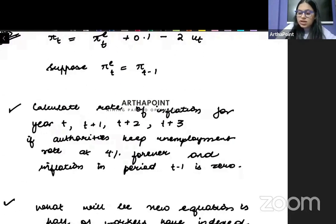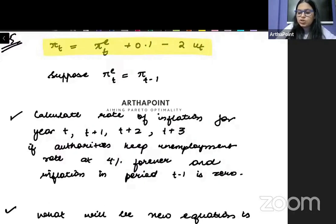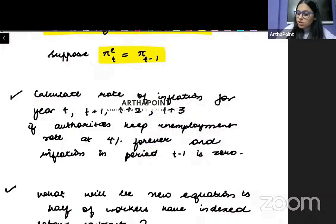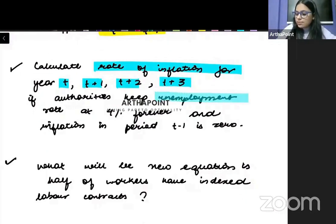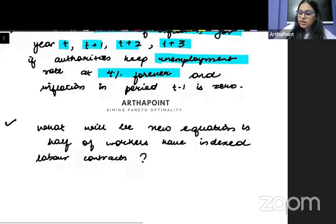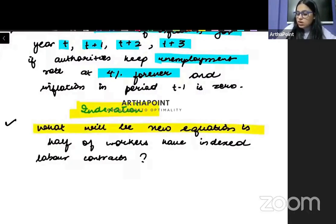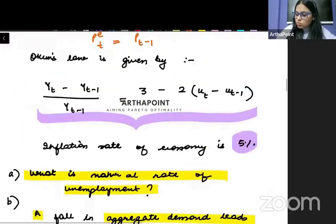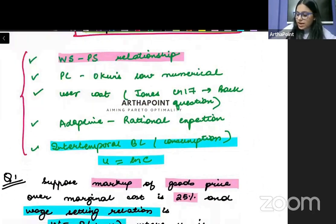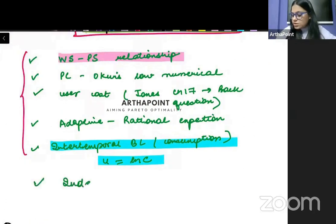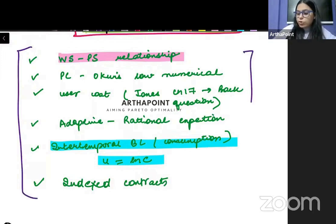This type of question also has a very high chance of being asked in exam. Where they will give you the equation of the Phillips curve and they will tell you how expectations are being formed. And then they will ask you to form a table. They will ask you to make a table and calculate the rate of inflation for period T, T+1, T+2, T+3. If we want to keep unemployment rate at 4% forever. And then they will talk about indexation. So I have done numericals on indexation also in class. This can definitely be asked in exam. So they will say now write down the equation again if half of the workers have indexed contracts. So here I just want to mention that indexed contracts numerical is important. Indexed contracts. This is also important. So all these topics are very important from the point of view of numericals.